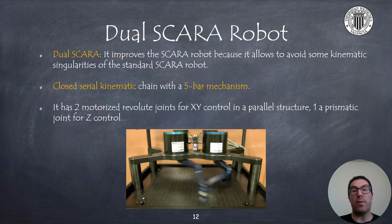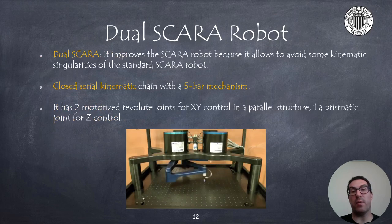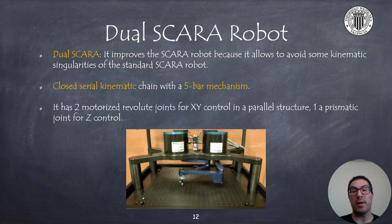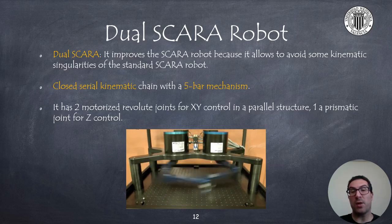The dual SCARA robot is an improvement of the SCARA robot that allows avoiding some kinematic singularities. Its kinematics is a closed serial chain and uses a four-bar mechanism. It has two revolute joints for X-Y control and a prismatic joint for Z control.